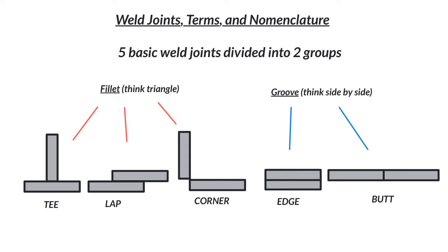Here we're going to take a look at the five basic weld joints that are divided into two groups. Pretty much everything that is welded out there is either T, lap, corner, edge, or butt weld. There are some differences — you can weld two pipes together and that would still be a butt weld, but it's obviously round, or maybe some tubular square tube tubing. That could be a butt weld.